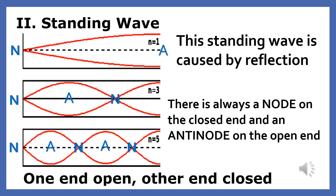People either call this a standing wave closed at one end or a standing wave that is open at one end. Notice that a node is always found at the closed end and an anti-node is always found at the open end.